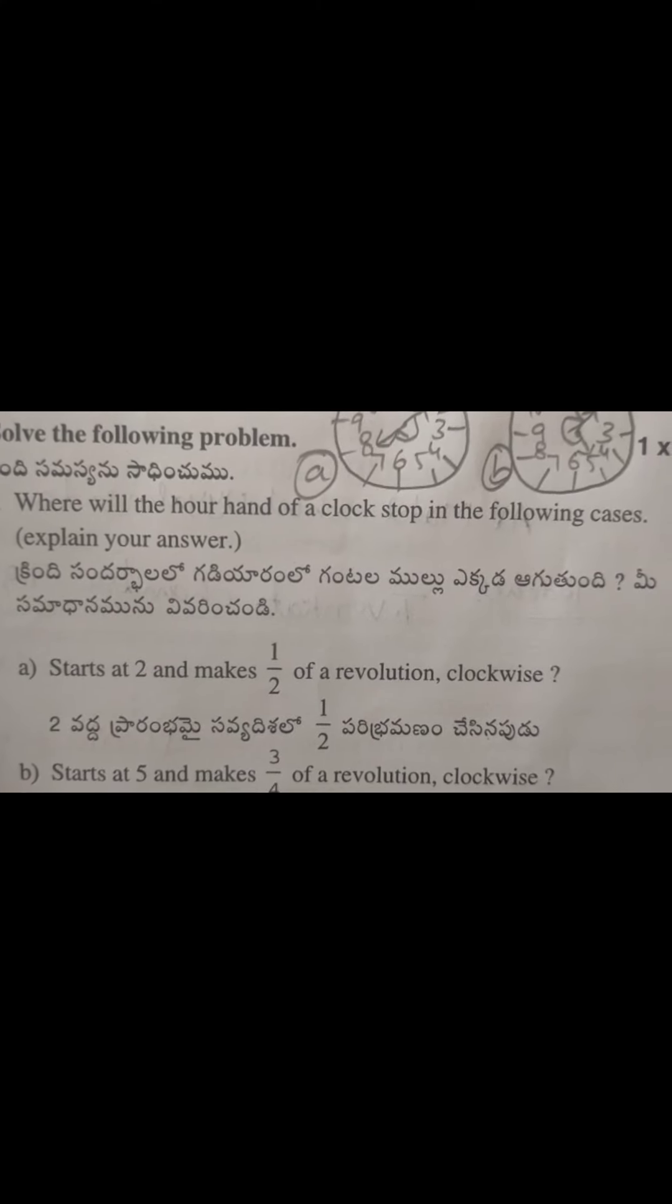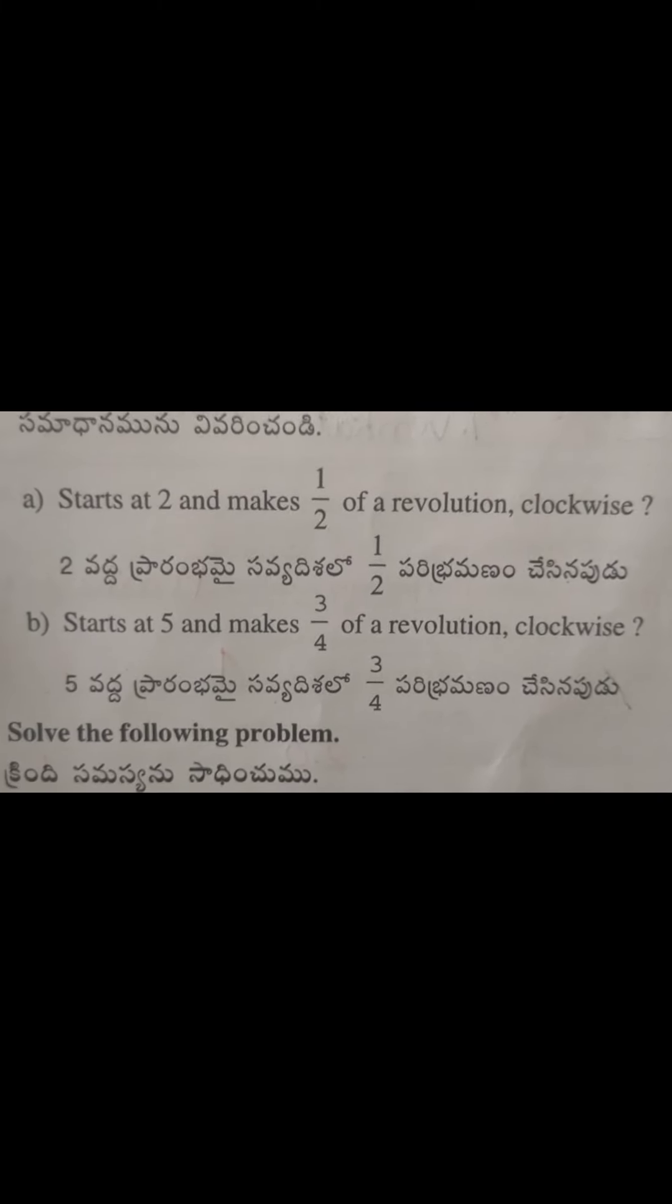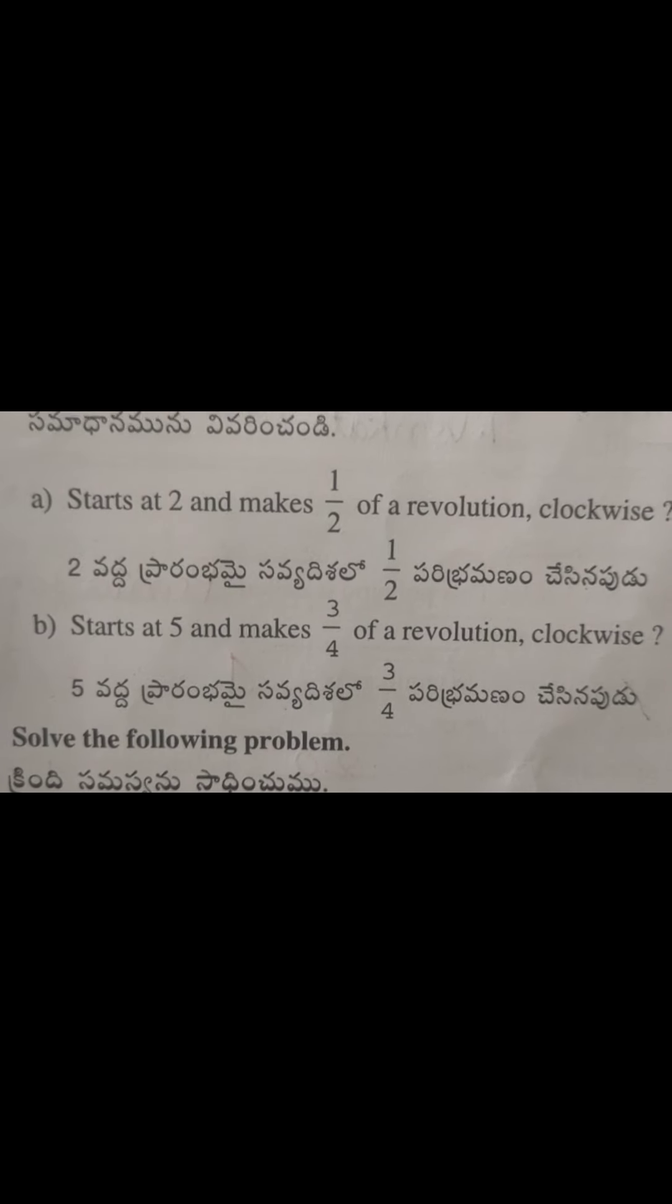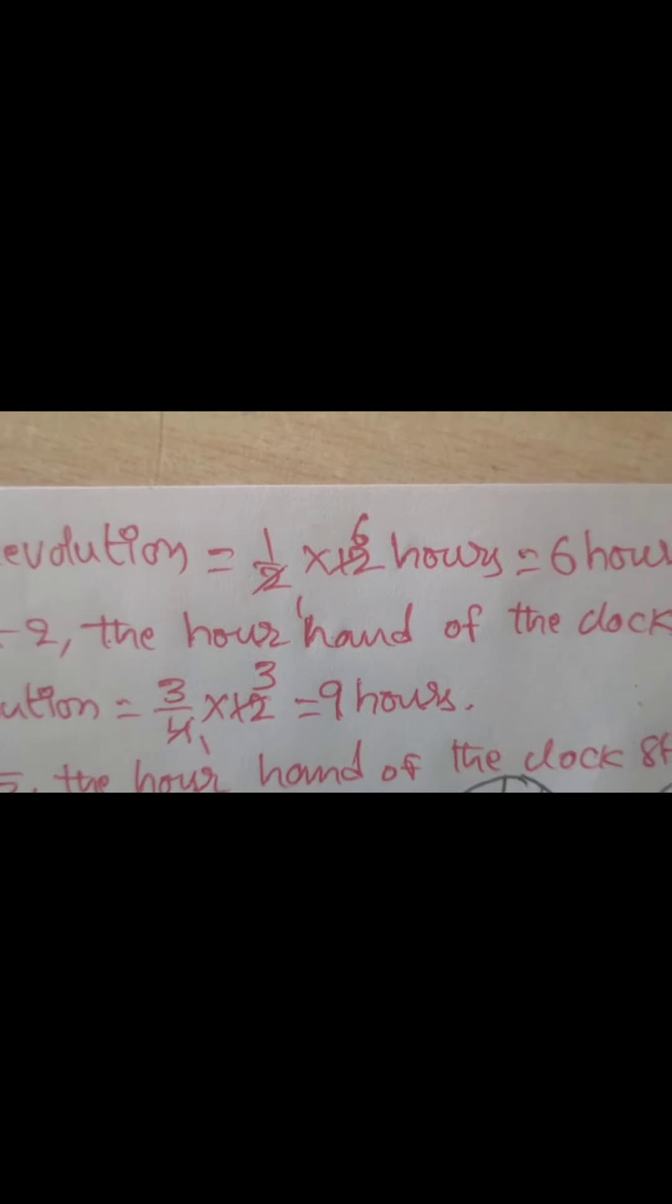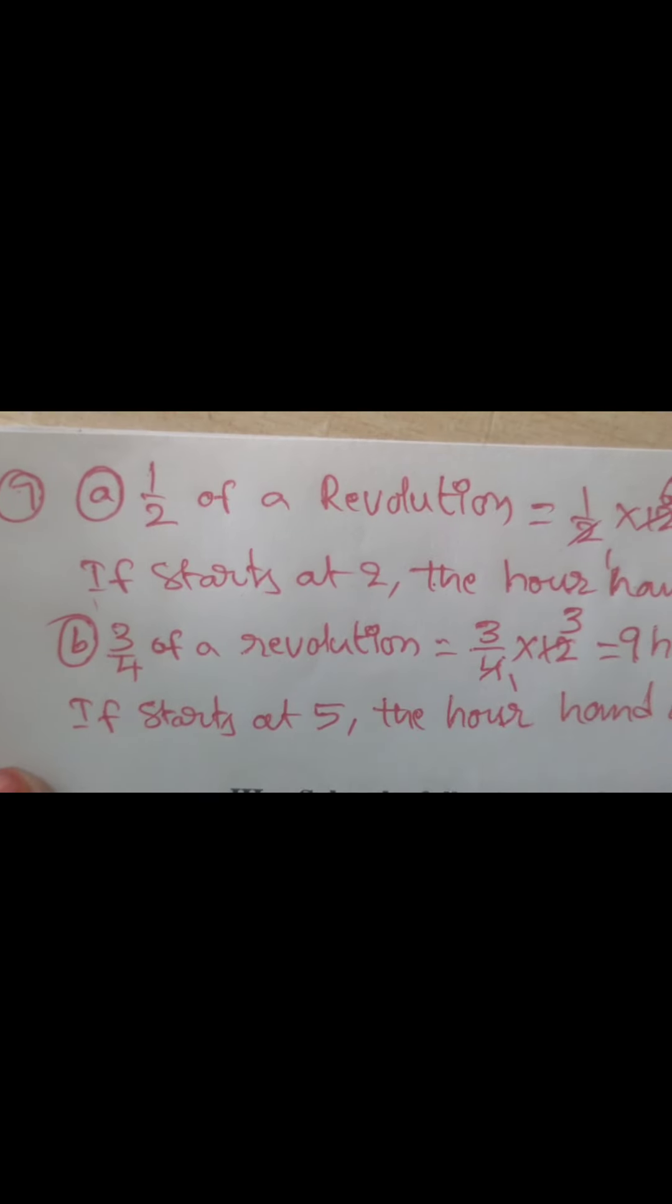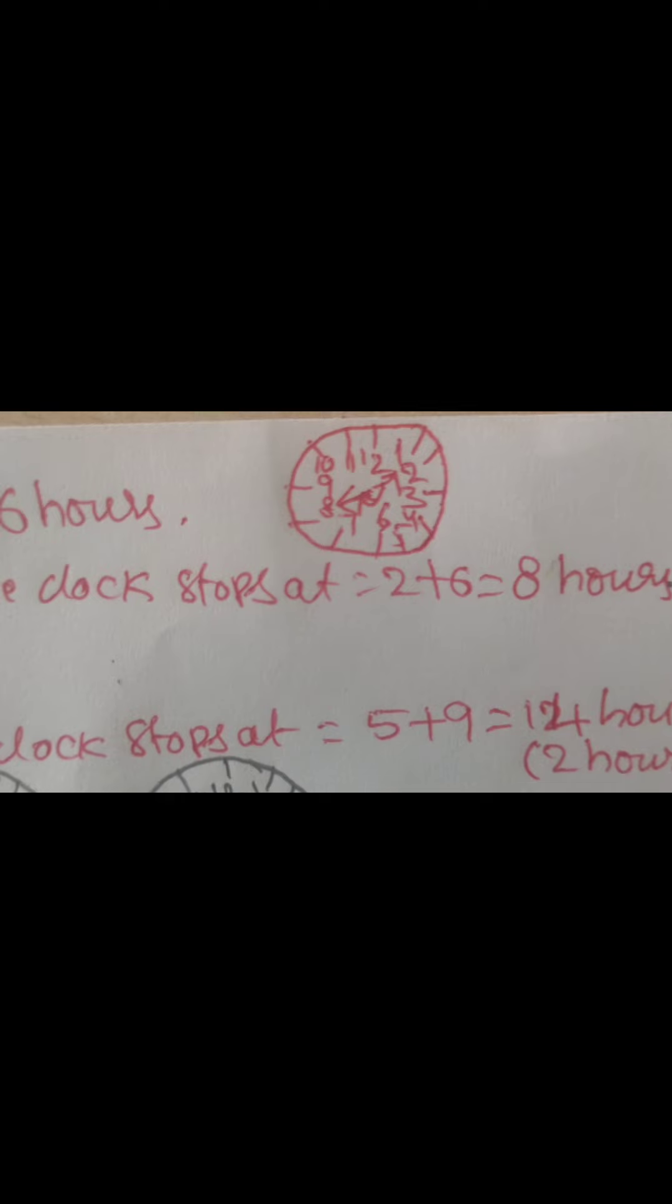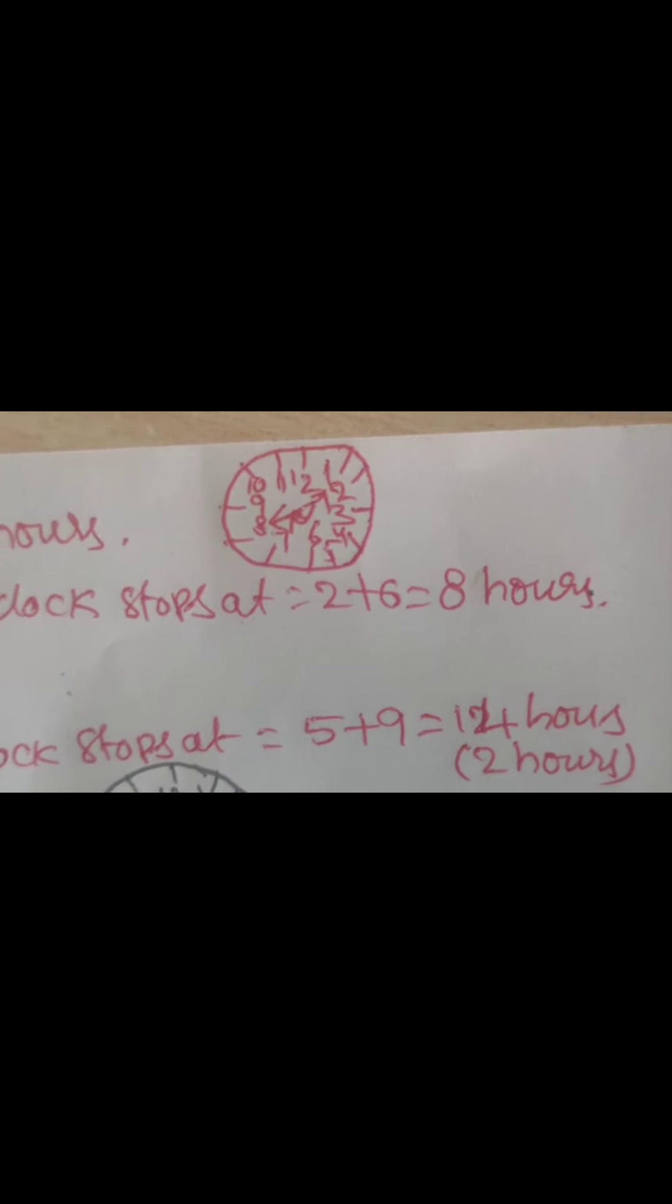Where will the hour hand of a clock stop in the following cases? Problem number one: start at two and makes half of revolution clockwise. Half of a revolution means one by two into twelve hours. Two ones are two, six. I get cancelled. So six hours. So the hand have to move six hours. If starts at two o'clock, the hour hand of the clock stops at two plus six. Six hours move. So two plus six equal to eight hours. The hand stop at eight hours.